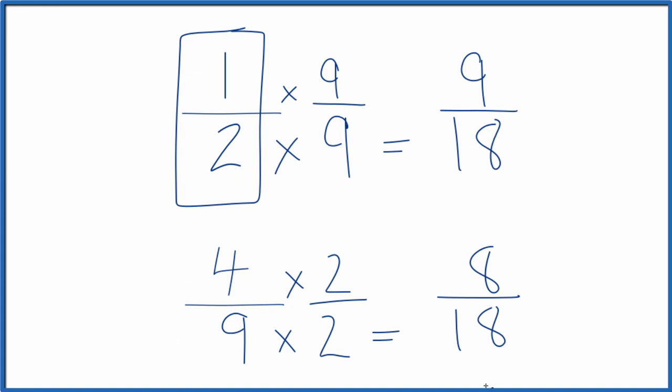You find that common denominator, then you can compare the numerators. In this case, one-half is greater than four-ninths.